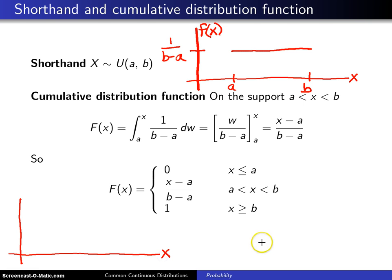First, if you recall from previous two chapters, the cumulative distribution function capital F of x is the probability that the random variable X is less than or equal to little x. To draw that for the uniform distribution, here is a and here is b.